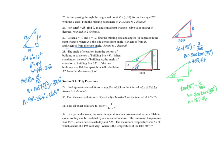The height of building A is going to equal B minus H, where B is the full height of building B and H is the portion from the roof of building A up to the top of building B. So the height of building A equals 333 minus 187.